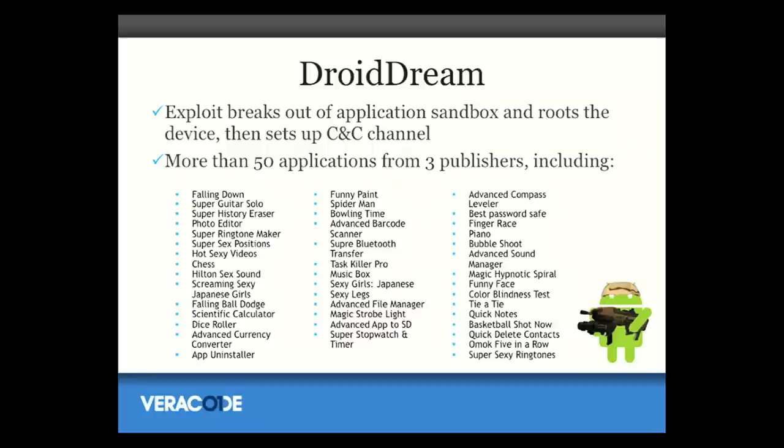Droid Dream was probably the most famous piece of Android malware. It affected about 250,000 users over a few days before it was found. They repackaged 50 bogus applications, put them in the Android app store, and it used Android jailbreak code to escalate privileges, then essentially installed command and control, turning all the victims into a botnet. But you could have detected this if you were scanning the application and just looking for API calls that required root permission to execute correctly.